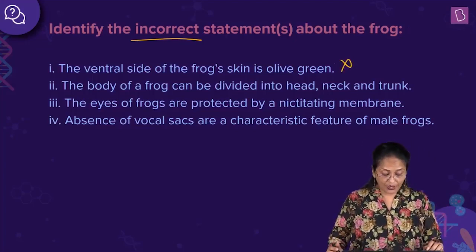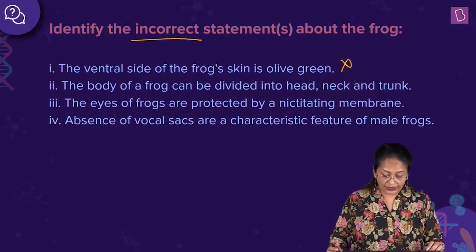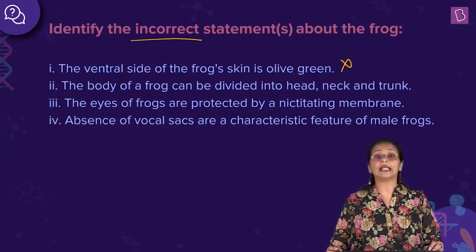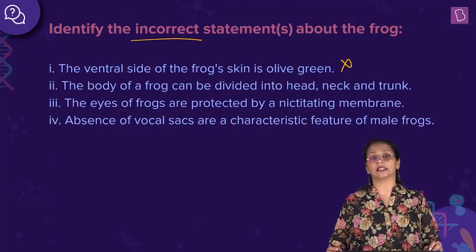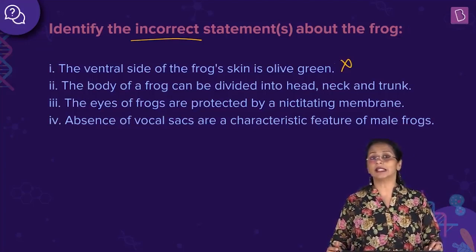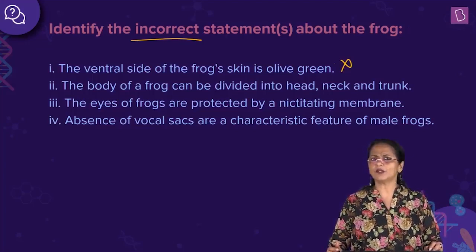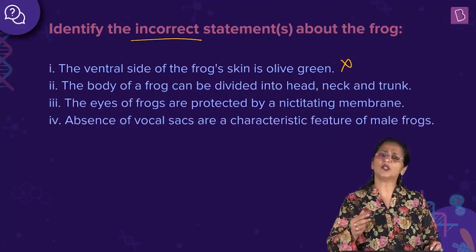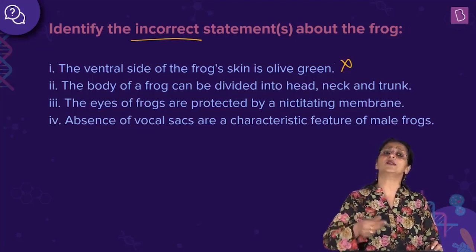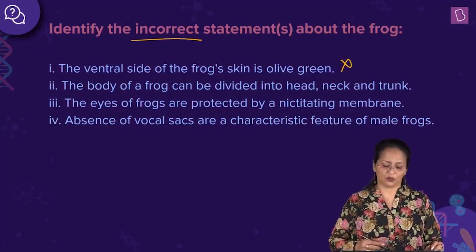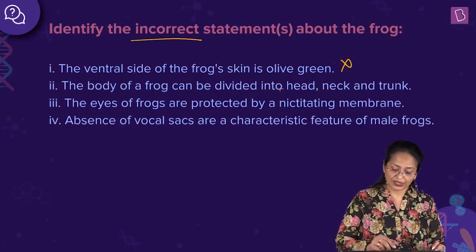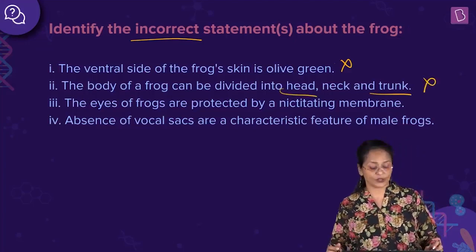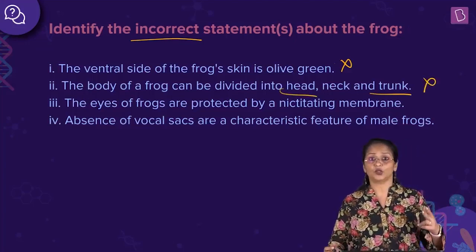Statement two: the body of a frog can be divided into the head, neck, and trunk. Is there a neck for frogs? No. The absence of neck is what helps it to jump on the ground. The body is just divisible into the head and the trunk. This statement is also incorrect.